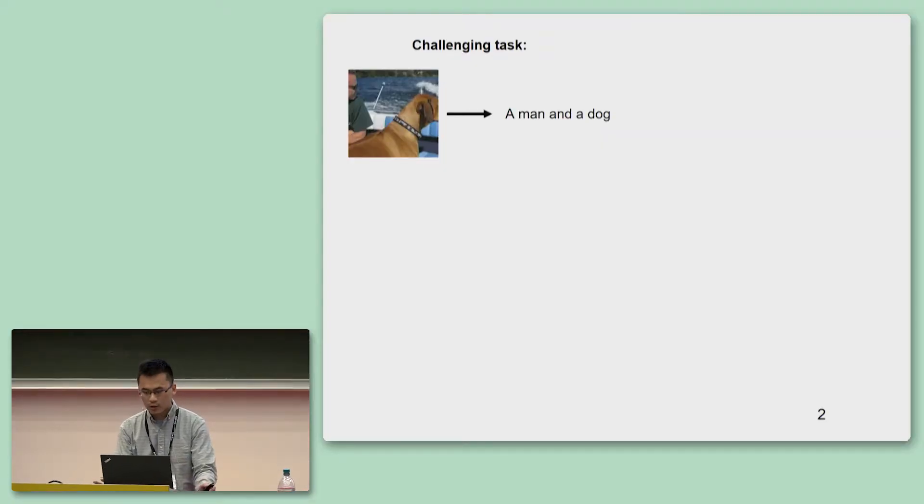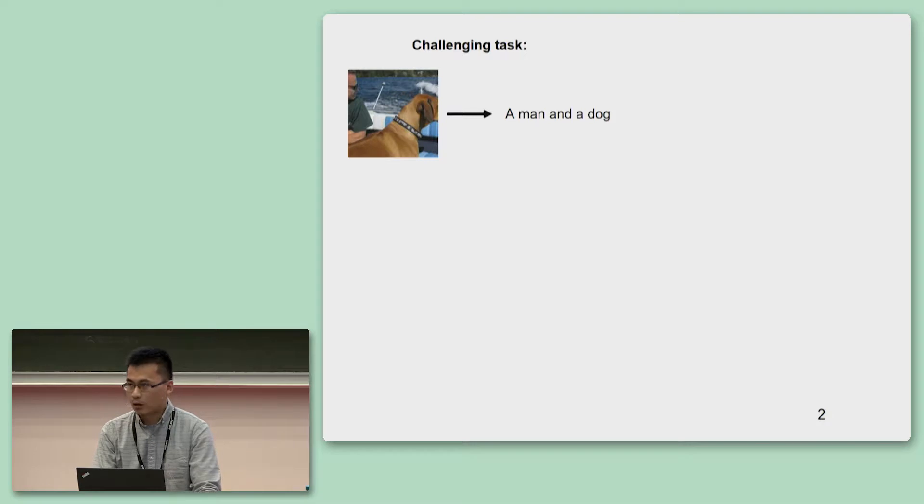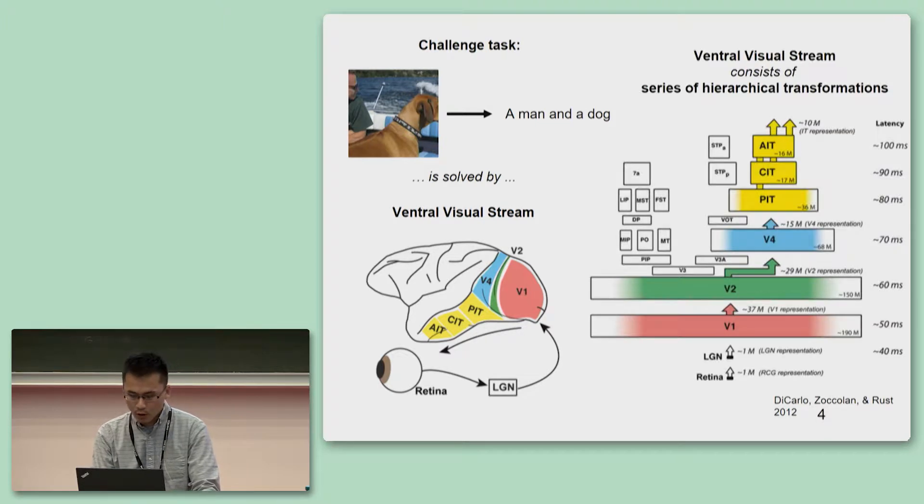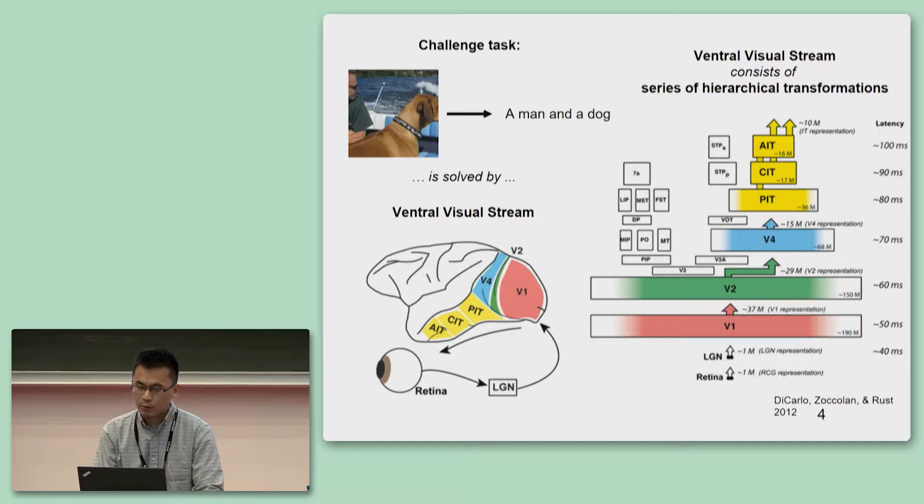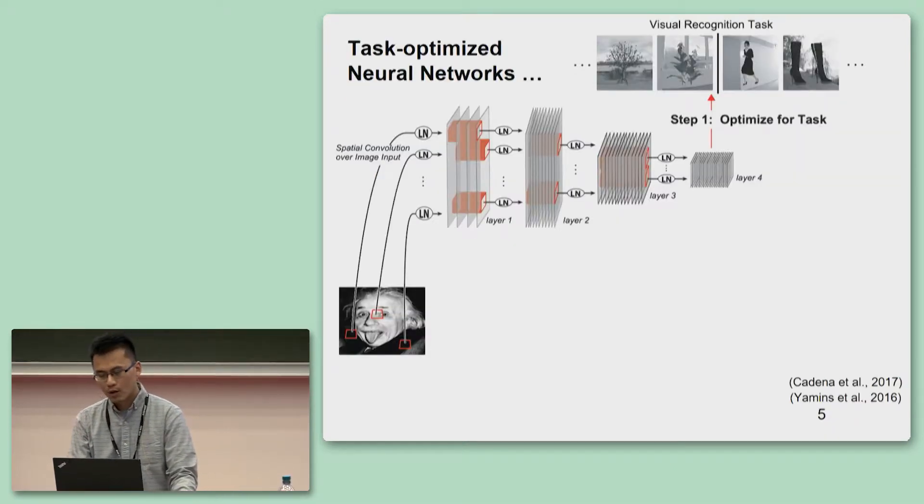Humans show remarkable performance recognizing objects in complex environments. For example, you can easily tell that this picture has a man and a dog, even though both of them are only partially visible. This type of challenging task is solved by the visual stream. This stream contains a series of brain areas, and these areas work hierarchically to convert raw pixel inputs into useful visual abstractions such as object categories.